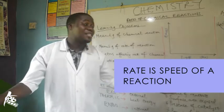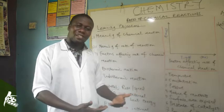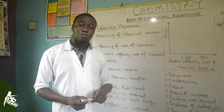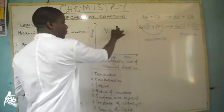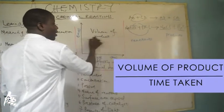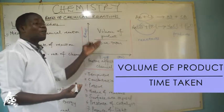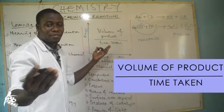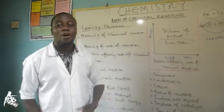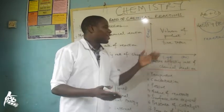How do we calculate speed in mathematics? Speed is basically distance over time. But for this chemistry class, we will look at rate of our reaction to be the volume of the product over time taken, or the volume of the reactants used up over time taken.